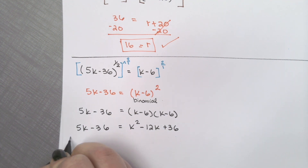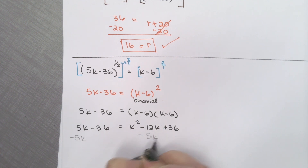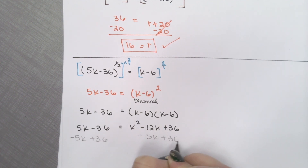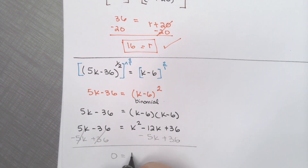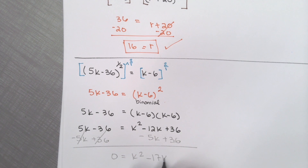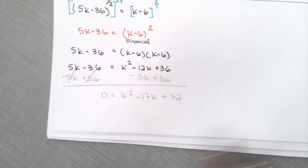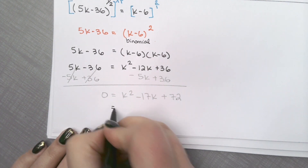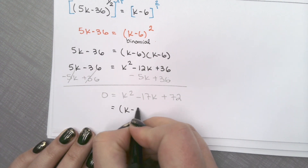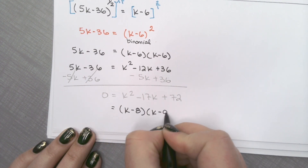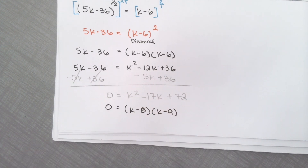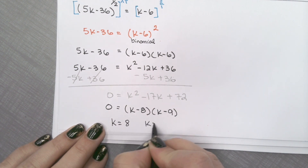From here, you're going to move everything to one side. So I'm going to subtract 5k and add 36. We get k squared minus 17k plus 72. And 72 factors as 8 and 9 — so we have k minus 8 and k minus 9. Be careful here: if you end up using the rainbow method, you do need to divide. In this case we did not use the rainbow method — our leading coefficient is 1, so this is good. So we got k is equal to positive 8, and k is equal to positive 9. We have to check.